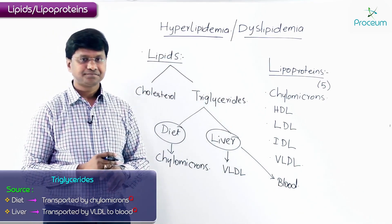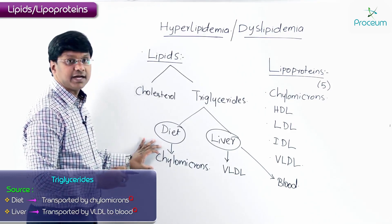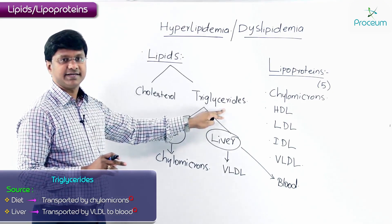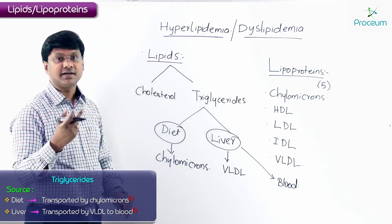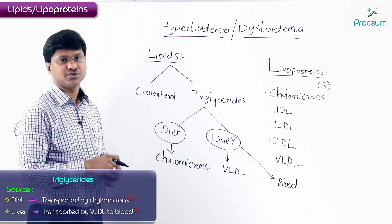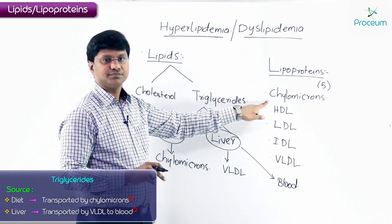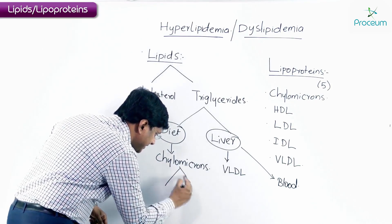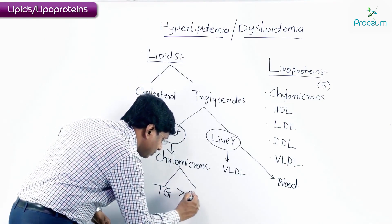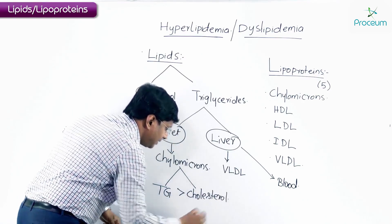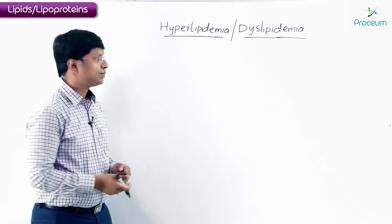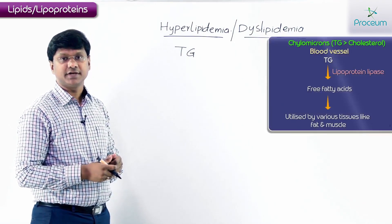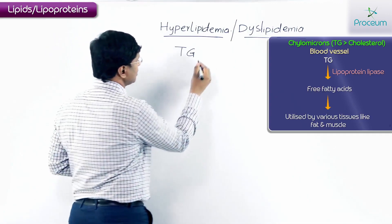Chylomicrons transport both cholesterol and triglycerides. However, within chylomicrons, the triglyceride content is more compared to that of the cholesterol content.